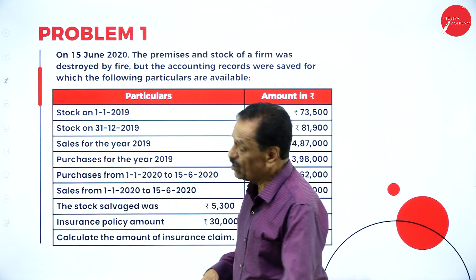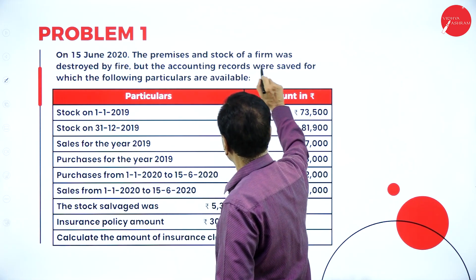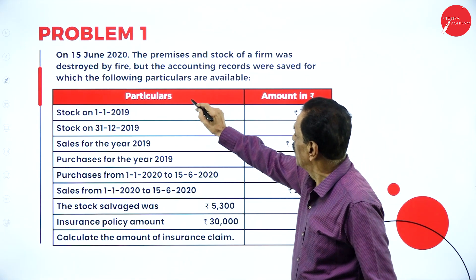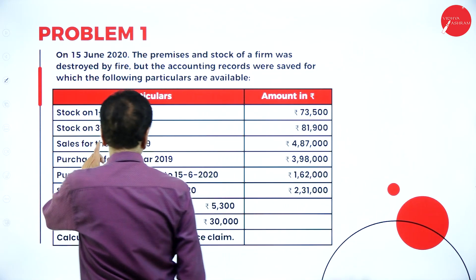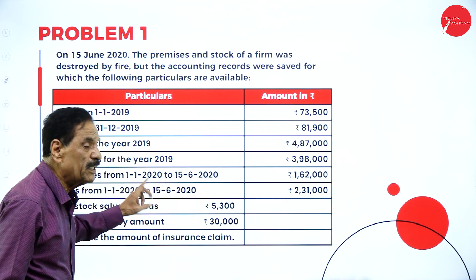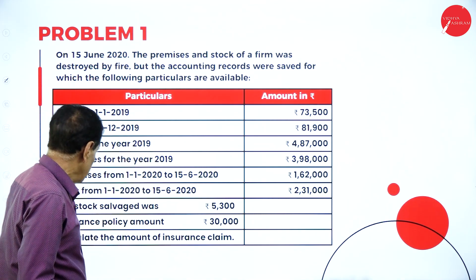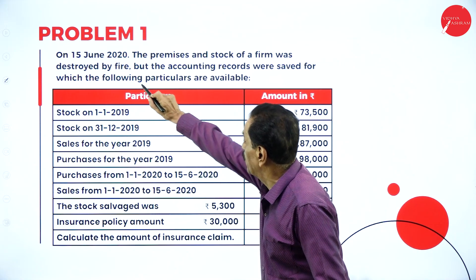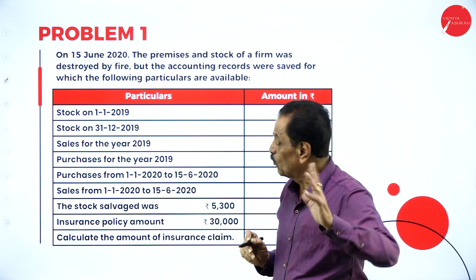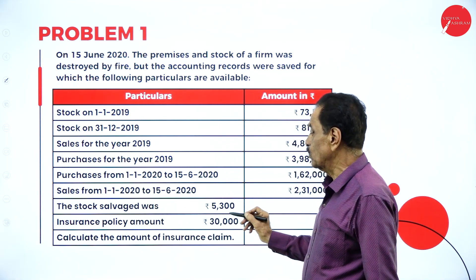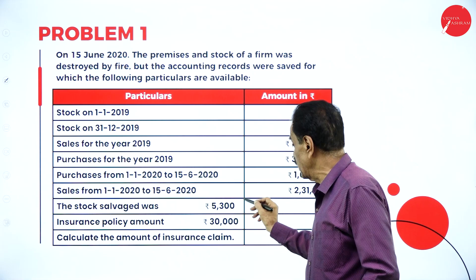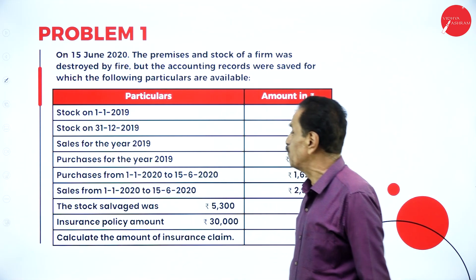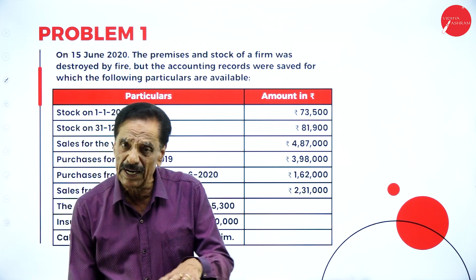Now let's look at the problem. On 15th June 2020, the premises and stock of a firm were destroyed by fire, but accounting records were saved. The given particulars include: stock on 1/1/2019, stock on 31st December 2019, sales and purchases for the year, purchases from 1/1 to 15th June, sales from 1/1 to 15th June, stock salvage of 5,300, and an insurance policy amount of 30,000.